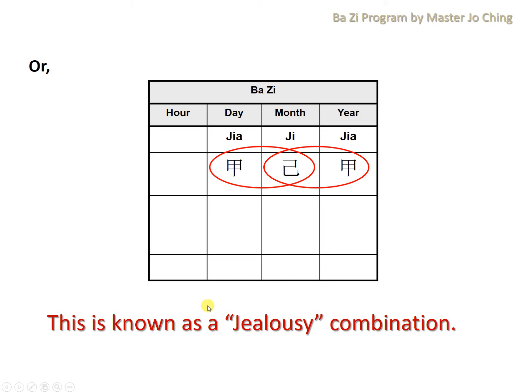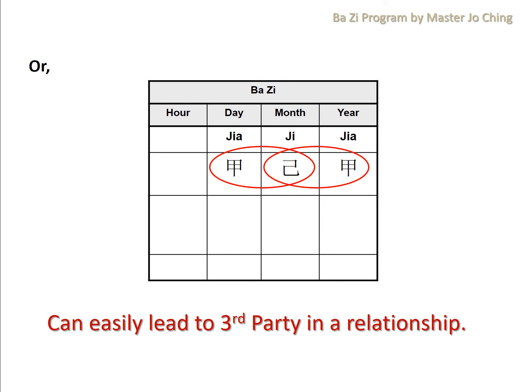This is actually known as the jealousy combination. In Chinese, we call it the Du He. And usually it can easily lead to a third party in a relationship, based on some of the charts that I have read.